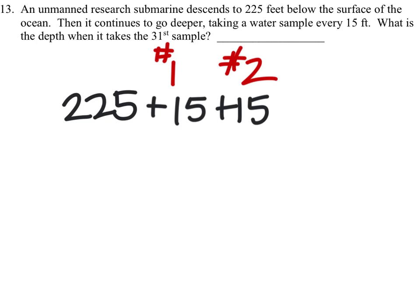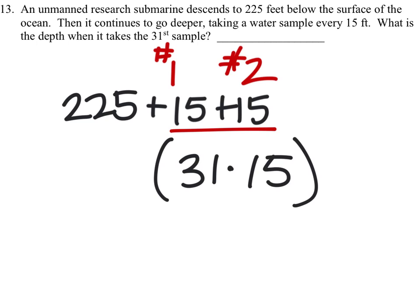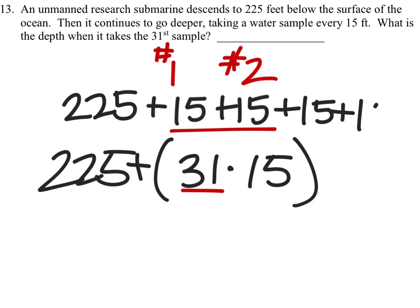So in other words, we're going to have 31 times 15, because we're going to add 15 thirty-one times. We still have that 225 plus this, but this may be simpler than just adding 15 all the time. You could do that - if you want to continue to add 15 thirty-one times and keep track of that, that's okay. But we can simplify this with multiplication.